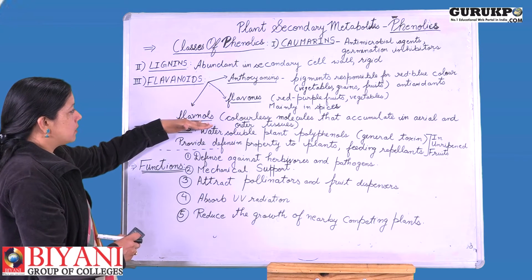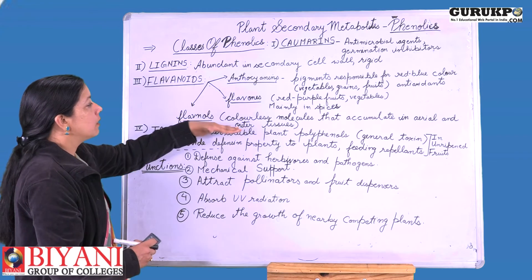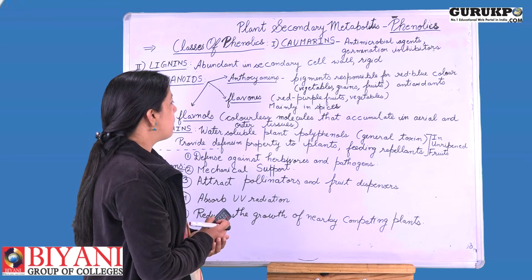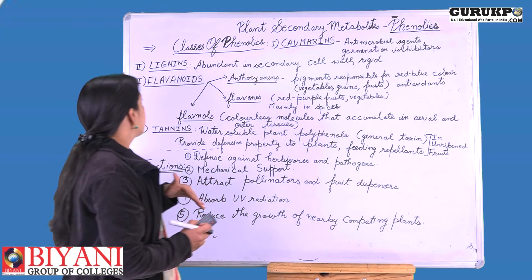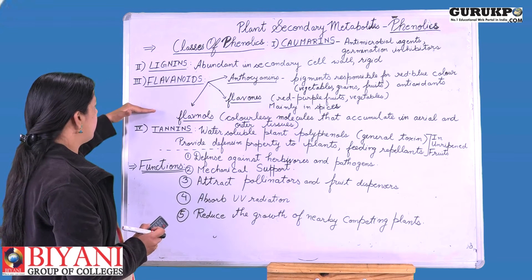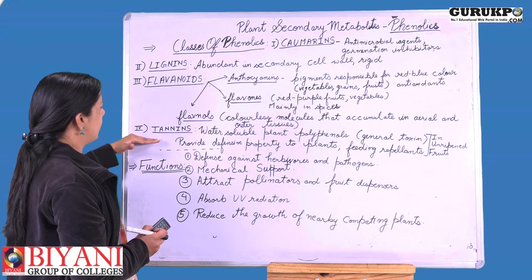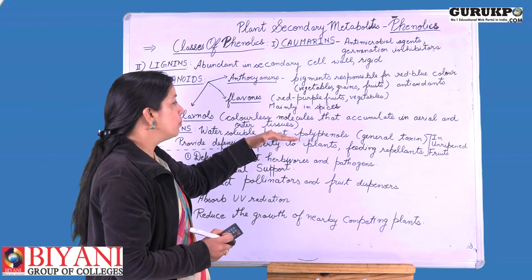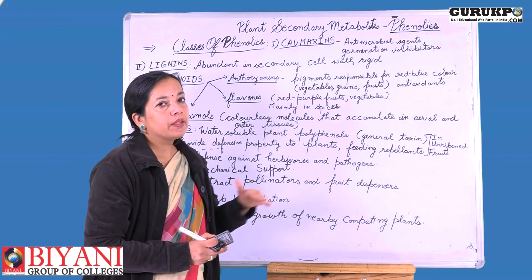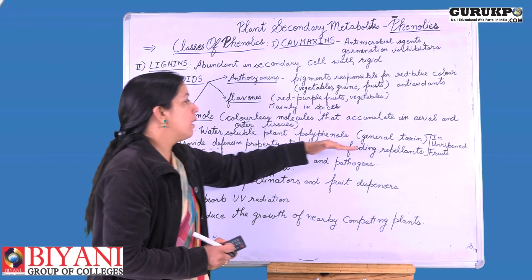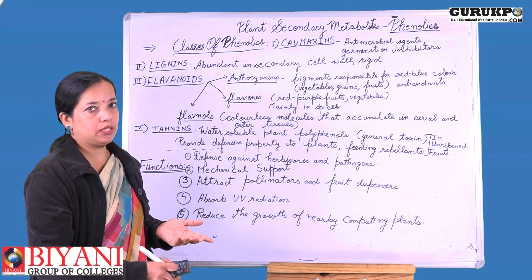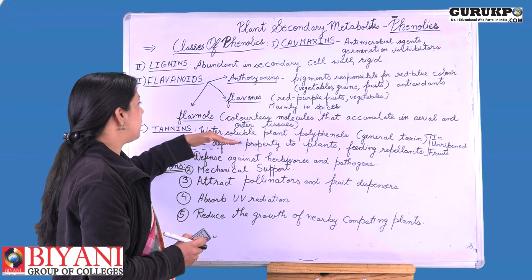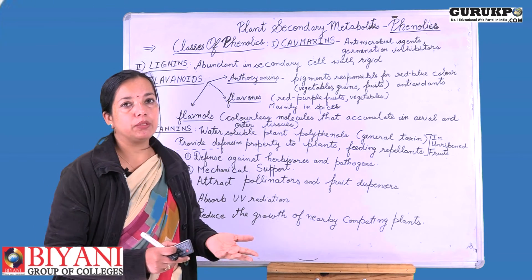Flavanols are colourless molecules that accumulate in the aerial and outer tissues of the plant. The fourth class is tannins, which are water-soluble plant polyphenols. These polyphenols are toxic and act as toxins, so generally herbivores avoid eating those plant parts that are rich in tannins because those parts are toxic to them.